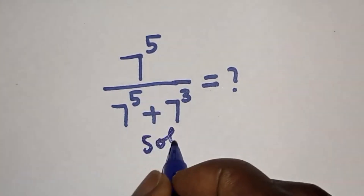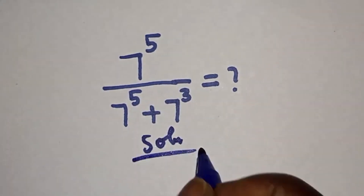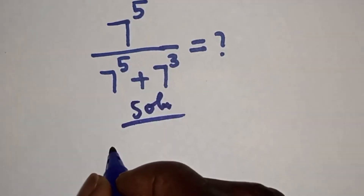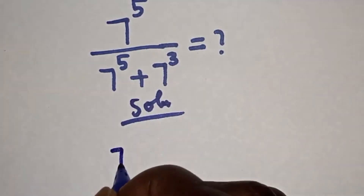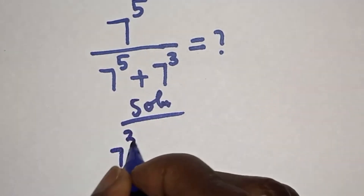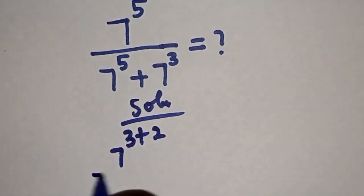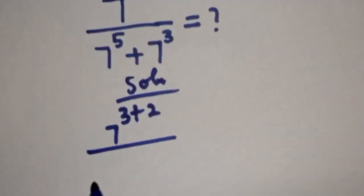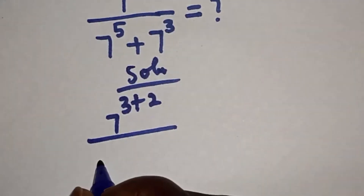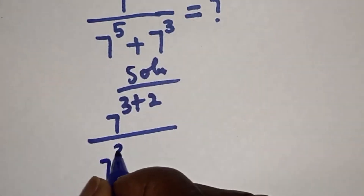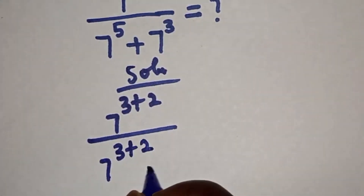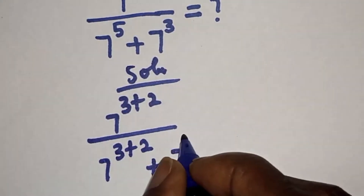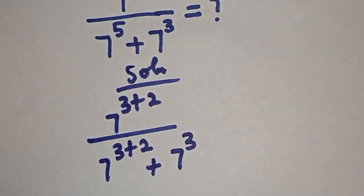Solution. Now, 7 raised to power 5 can be written as 7 raised to power 3 plus 2. So the expression becomes 7 raised to power 3 plus 2 over 7 raised to power 3 plus 2 plus 7 raised to power 3.